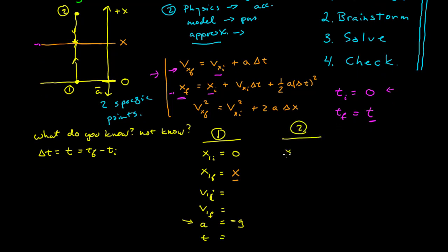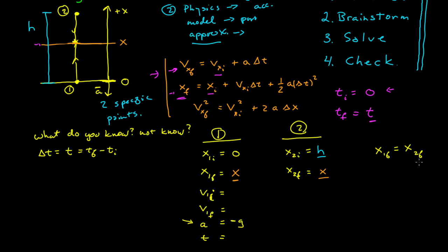For particle 2, its initial position — I'm going to give it a name and say it starts out at some height h. The problem didn't say particle 2 is dropped from height h; I get to define the notation in a way that's meaningful to me. Its final position is the same as the final position of particle 1, because the point in time I'm looking at is when they collide. I used the relationship that the final position of 1 equals the final position of 2 — this isn't a physics equation; it's a logical relationship extracted from the context of the problem.